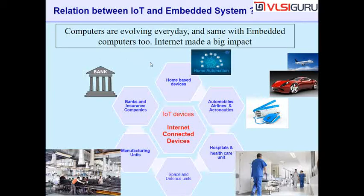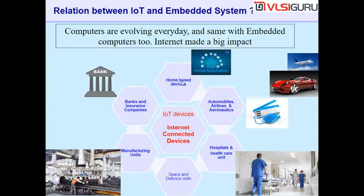These computers find applications everywhere. The moment embedded computers also get connected to the internet, we say the embedded computer is IoT-enabled. Such embedded computers find applications everywhere — for example, a home automation device that switches lights on and off based on commands you send from your mobile phone. Your mobile has internet, your home has internet, you open an app and press a button, and the lights switch on or off.